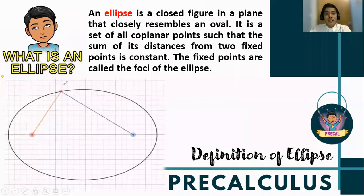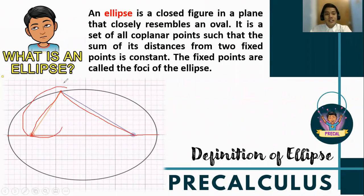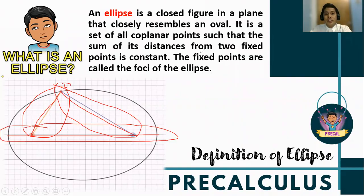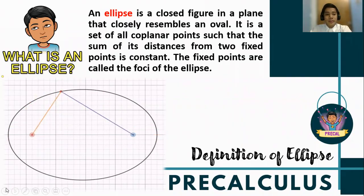Notice this red line and this blue line — this distance and this distance have an equal sum with this axis. So whatever the distances of the two points are, they will be equal to these axes, and later you will learn the meaning of that axis. This time the ellipse has two fixed points, unlike a parabola which has only one fixed point. These two fixed points are what we know as the foci of the ellipse.